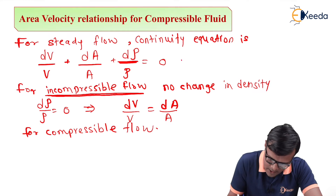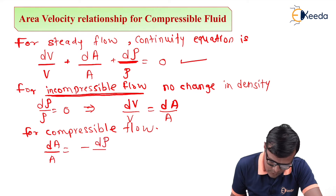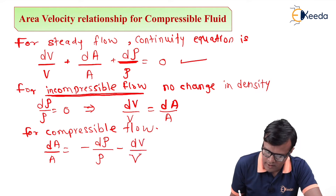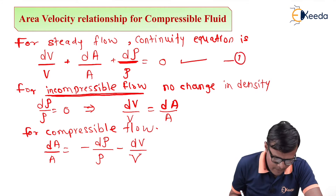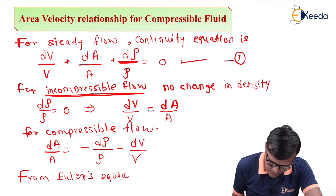For compressible flow, this simple relation is not valid. We rearrange the continuity equation to get: dA/A = −dρ/ρ − dV/V. This is the rearrangement of the continuity equation, which we will combine with Euler's equation of compressibility.